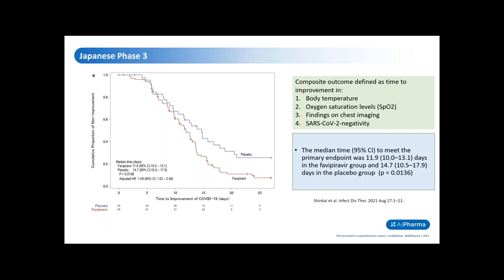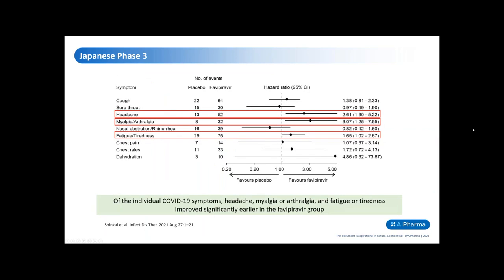It's easy to assume that 11.9 days and 14.7 days is slow when considering how quickly average outpatients improve from symptoms, but it's important to stress that the patients enrolled in this study had COVID-19 pneumonia. Among individual COVID-19 symptoms, significant improvements were noted in the alleviation of headache, myalgia or arthralgia, and fatigue or tiredness. Other symptoms showed no statistically significant differences between the two groups.